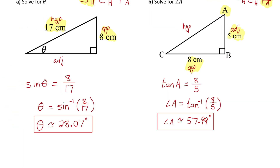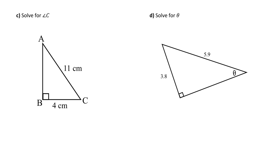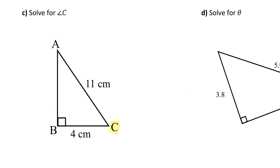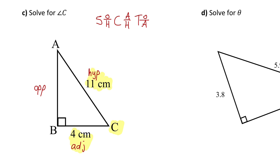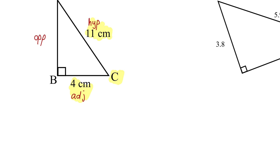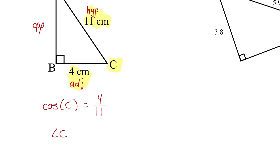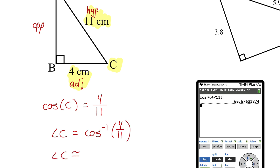In part C, solve for angle C. Labeling from reference angle C: hypotenuse across from the right angle, opposite across from C, adjacent touching C. Because we know the adjacent side and hypotenuse, we use inverse cosine, since cosine equals adjacent over hypotenuse. Cosine of angle C equals the adjacent side 4 divided by the hypotenuse 11. So angle C equals inverse cosine of 4 over 11, which is approximately 68.68 degrees.